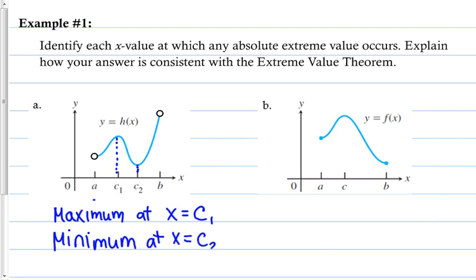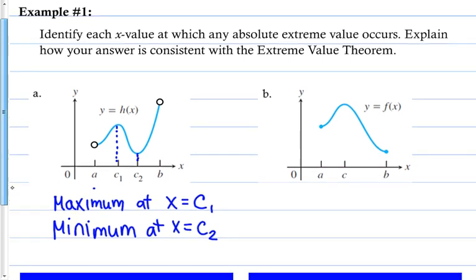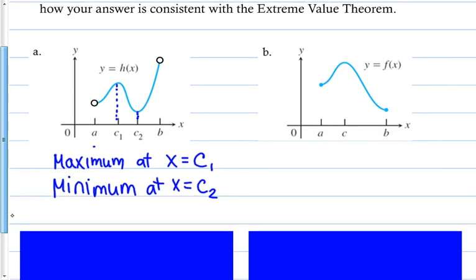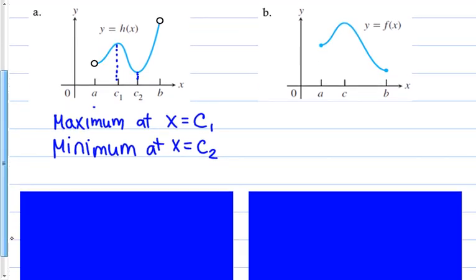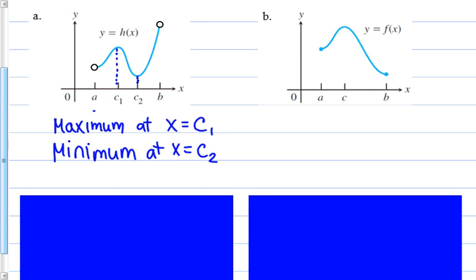The instructions said to identify each x value at which any absolute extreme value occurs — we did that — and then explain how the answer is consistent with the Extreme Value Theorem. The Extreme Value Theorem requires the function to be continuous. This function is continuous except at the endpoints, which are open. Therefore, the Extreme Value Theorem does not apply. The explanation: the EVT does not apply because the function h is not defined on a closed interval.